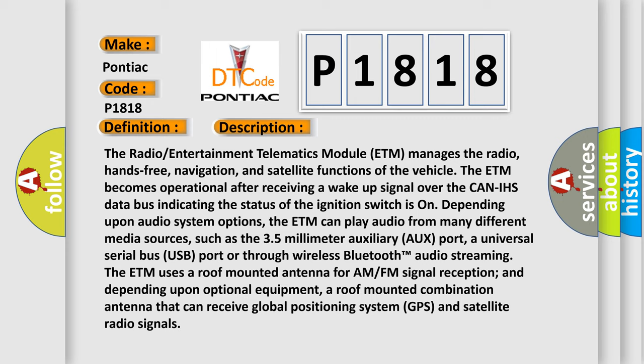The ETM becomes operational after receiving a wake-up signal over the CAN IHS data bus, indicating the status of the ignition switches. Depending upon audio system options, the ETM can play audio from many different media sources, such as the 3.5mm auxiliary port, a USB port, or through wireless Bluetooth audio streaming. The ETM uses a roof-mounted antenna for AM-FM signal reception and, depending upon optional equipment, a roof-mounted combination antenna that can receive GPS and satellite radio signals.